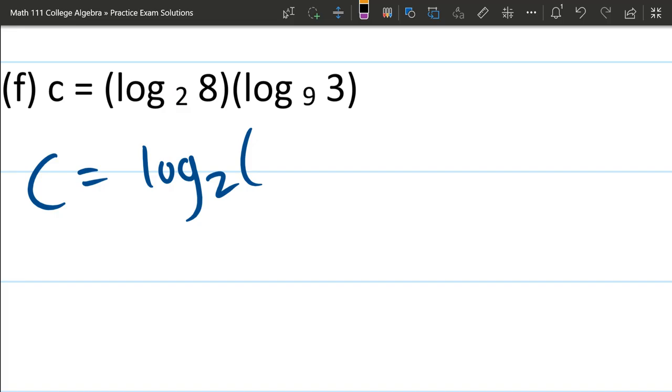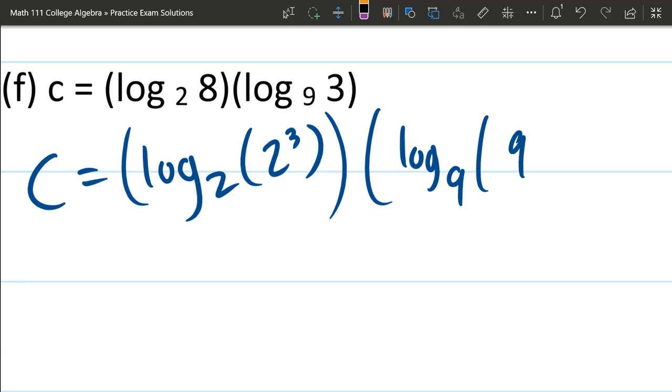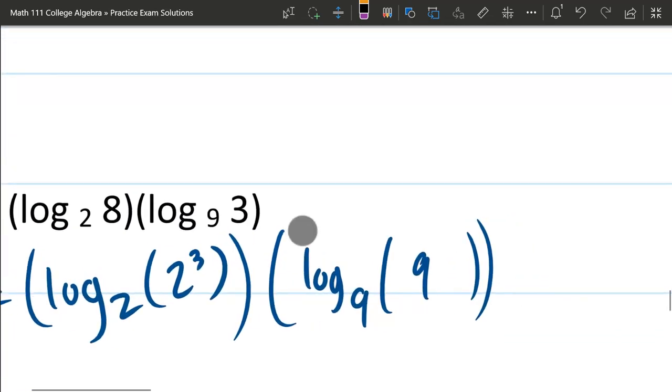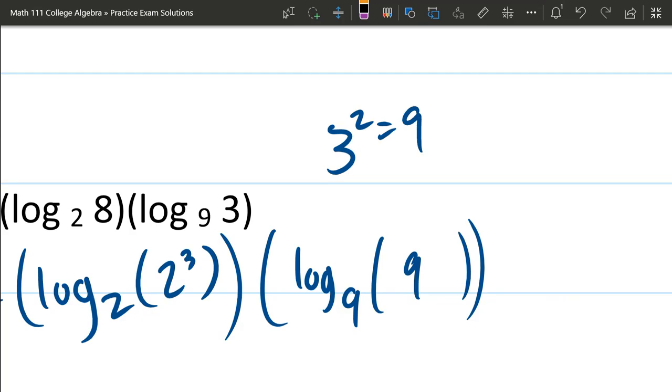So first one, 8 is 2 cubed. We've seen that before. So log base 2 of 2 cubed. The second log, we have log base 9 of - I'm going to write 9 as a power of 3. Normally you don't think of 9 as a power of 3. You think 3 squared is 9. It's pretty easy to move the power over. How do you move a square over? You square root both sides. So 3 equals 9 to the 1 half power. Half power is the square root.